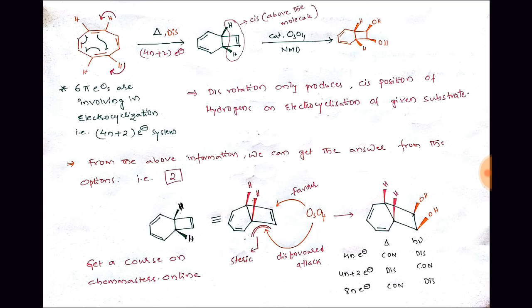By applying osmium tetroxide in the presence of NMO we get product B. Now a question arises: the two hydroxyl groups may come from either side of the molecule — osmium tetroxide may attack from above or from below the molecular moiety — and this creates some confusion about the stereochemistry.